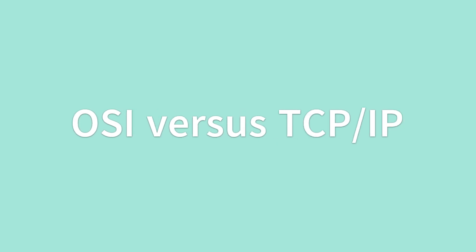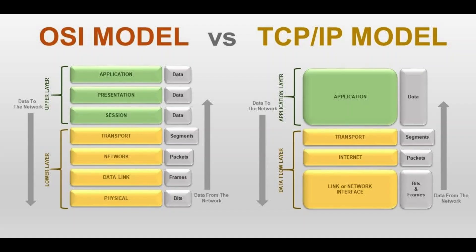OSI versus TCP/IP. TCP/IP has four layers in its transport model instead of the seven that the OSI reference model lays out.